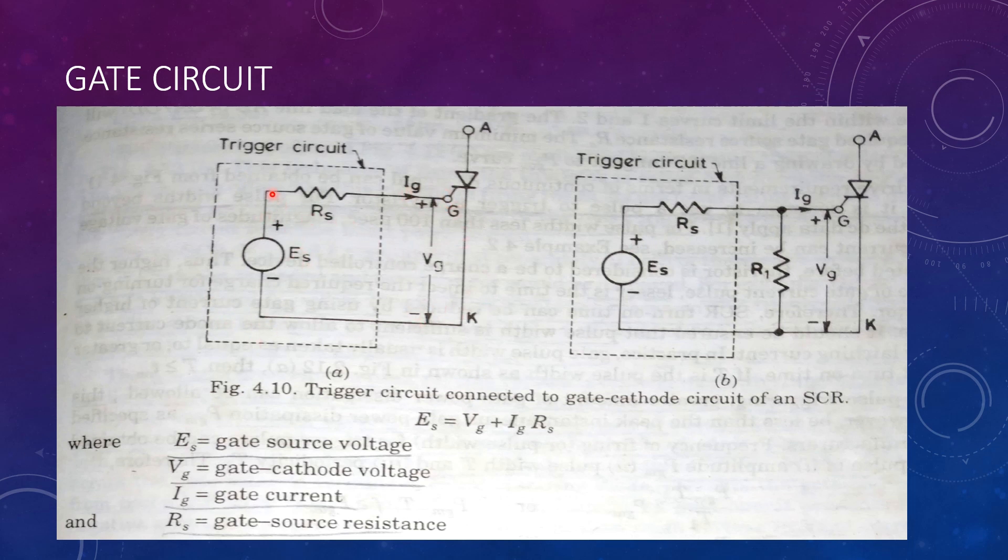If the value of RS is small and the gate current is large, an external resistance can be added over here in order to limit the gate current.